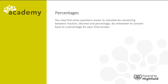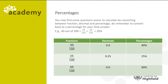You may find some questions easier to calculate by converting between a fraction, decimal and percentage, but you need to remember to convert back to a percentage for your final answer. For example, 40 out of 200 is 40 over 200, which simplifies to 20 one-hundredths or 20%. So 40% is 40 one-hundredths or 0.4; 25% is 25 one-hundredths or 0.25; 60% is 60 one-hundredths or 0.6.